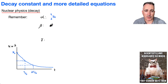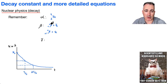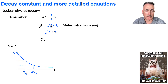What about beta? Remember, there's two different kinds: beta plus and beta minus. For beta minus, we write zero negative one. For beta plus, it goes like this. And don't forget, whenever you have a beta particle, you always have a little neutrino. So beta minus is an electron plus an anti-electron neutrino, and beta plus — this is actually called a positron — is a positron plus an electron neutrino.